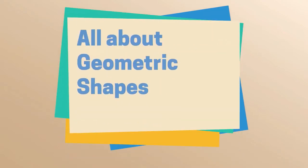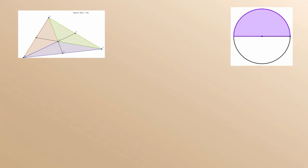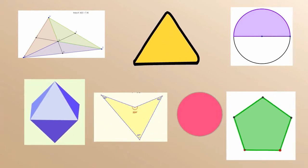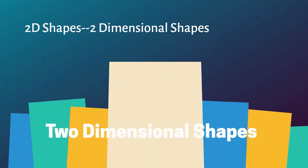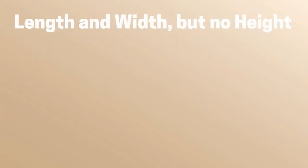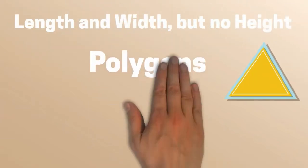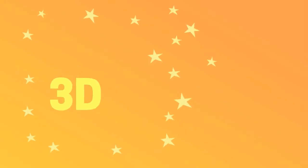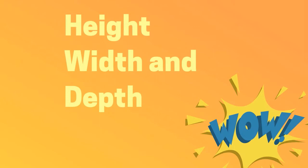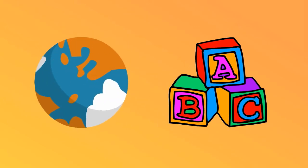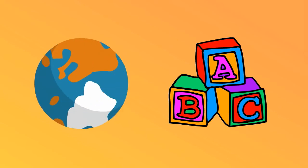Welcome to MooMooMath and All About Shapes. Let's take a look at many of the geometric shapes you will encounter in geometry class. We will begin with 2D shapes, which have length and width but no height. 2D shapes include polygons and curved shapes. 3D shapes, or three-dimensional shapes, have height, width, and depth. These shapes can have straight lines or curves.